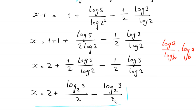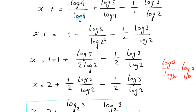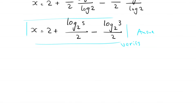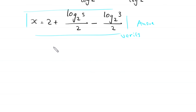This is the final solution of this equation. Now let us verify this value of x. To verify, we use the simplest form of the equation: 4 to the power x minus 1 times 15 is equal to 100. In this equation, we put the value of x equal to 2 plus log base 2 of 5 over 2, minus log base 2 of 3 over 2.